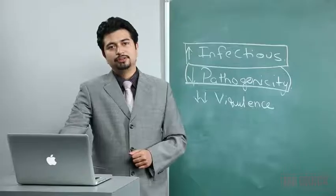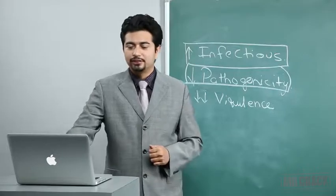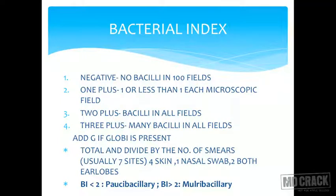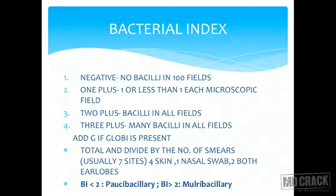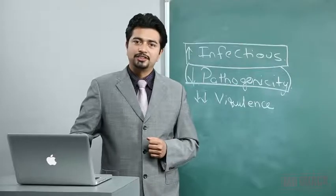Regarding the bacteriological index (BI): BI less than 2 is paucibacillary by WHO definition; BI more than 2 is multibacillary. This classification guides treatment decisions. The morphological index (MI) tells you the proportion of viable, living bacteria among all bacteria seen — specifically, the percentage of solid-staining bacilli in a smear.